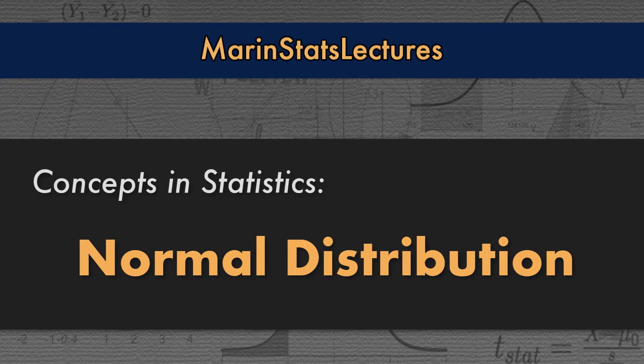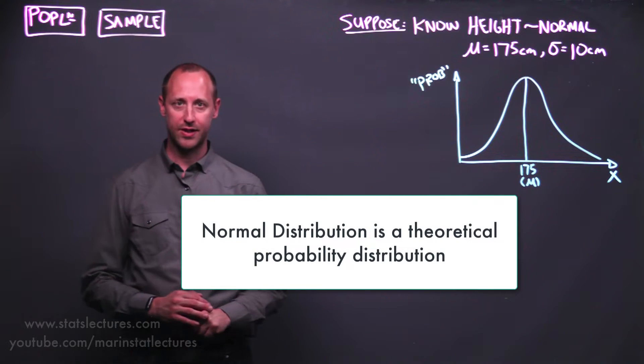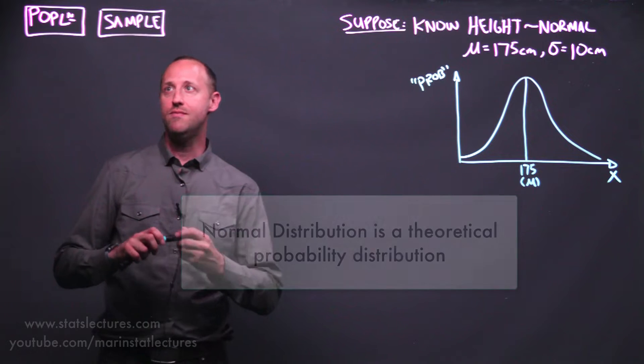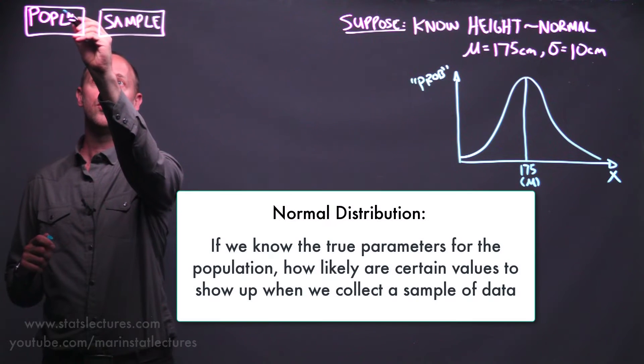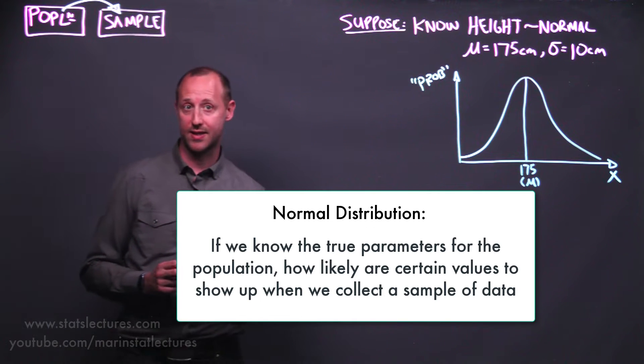In this video, we're going to introduce the idea of the normal distribution. It's a theoretical probability distribution which allows us to go from if we know the truth for an entire population, learning about what can show up when we collect a sample of data.